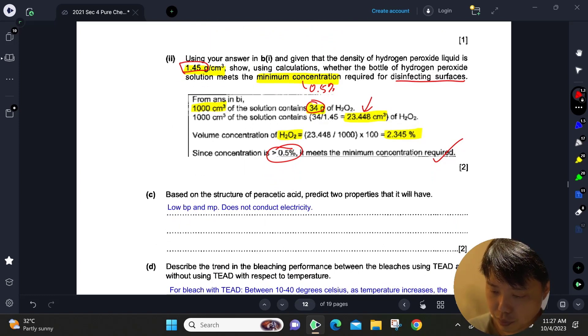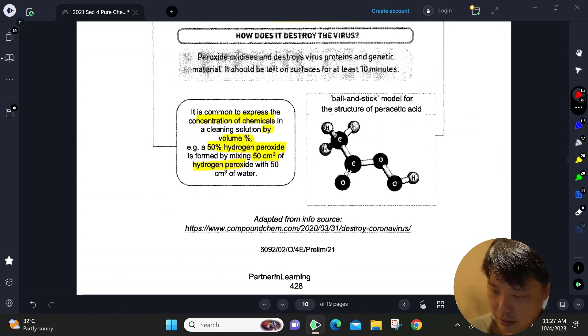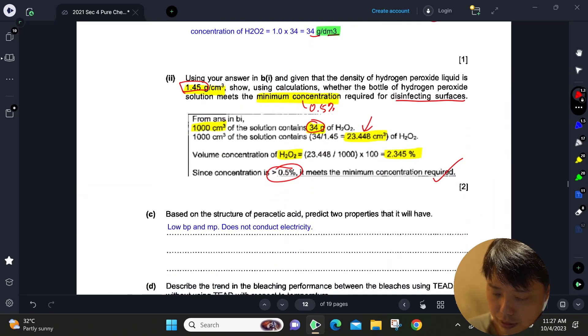Based on the structure of peracetic acid, predict two properties that it will have. If you look at this structure here, the peracetic acid is basically just like a normal organic acid. Usually they will have low melting and boiling point, and they usually don't conduct electricity.